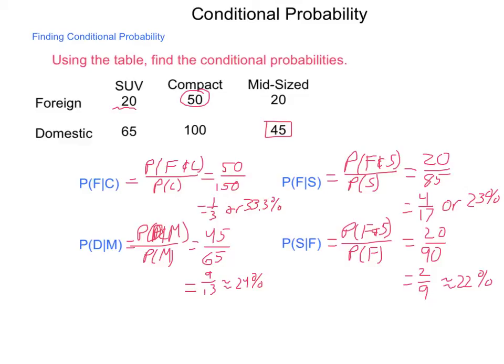Having conditional probabilities works out nicely using this formula: P(A|B) = P(A and B) / P(B). Tree diagrams are also very helpful in organizing the information, and solving this formula algebraically is helpful as well.